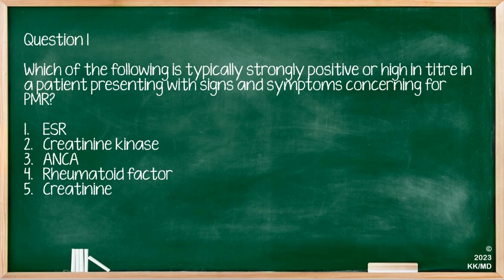Which of the following is typically strongly positive or high in titre in a patient presenting with signs and symptoms concerning for PMR? The options are ESR, creatinine kinase, ANCA, rheumatoid factor, or creatinine. The correct answer is a high ESR. Don't be fooled into thinking these patients have a high CK level — high CKs are seen in the inflammatory myopathies.